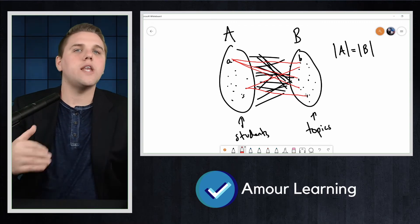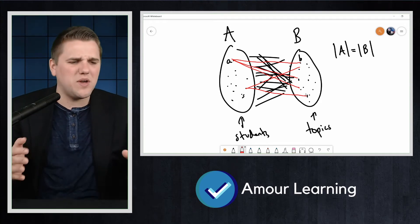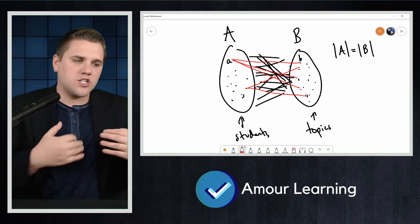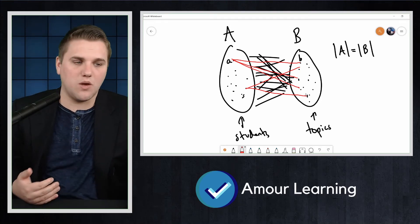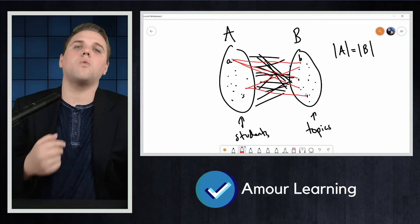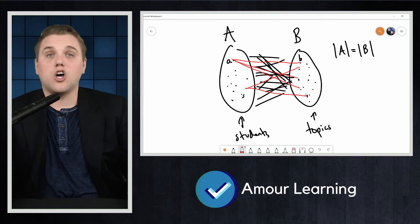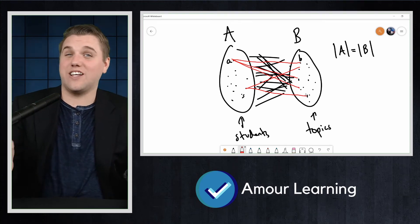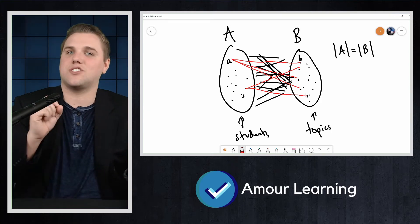The question is, when does a bipartite graph contain a matching of A? When can we successfully give students topics that they want, given that they have a list of topics that they want to present on? To begin to answer this question, consider what could prevent the graph from containing a matching. So this will not necessarily tell us a condition when the graph does have a matching, but at least it is a start.